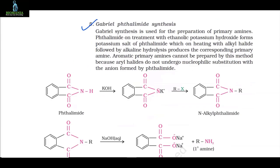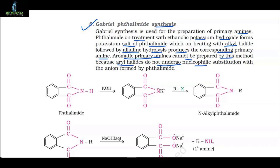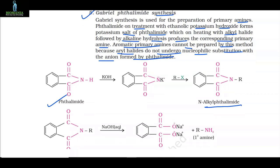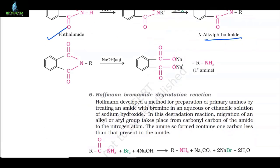Method 5: Gabriel phthalimide synthesis. Gabriel synthesis is used for the preparation of primary amines. Phthalimide on treatment with ethanolic potassium hydroxide forms the potassium salt of phthalimide, which on heating with alkyl halide followed by alkaline hydrolysis produces the corresponding primary amine. Aromatic primary amines cannot be prepared by this method because aryl halides do not undergo nucleophilic substitution with the phthalimide anion.